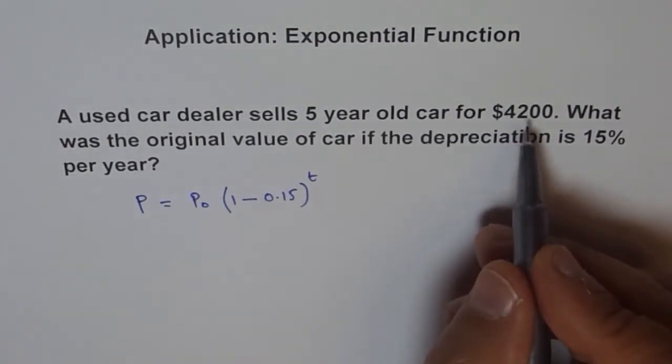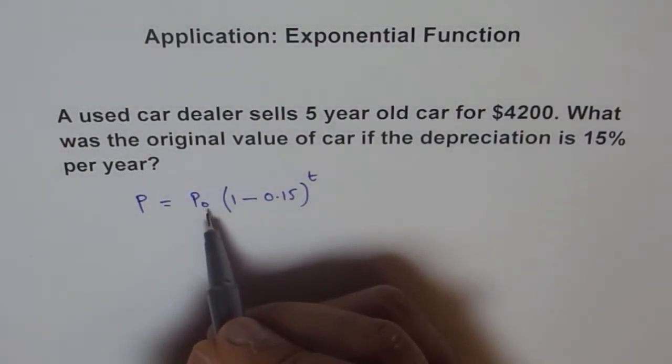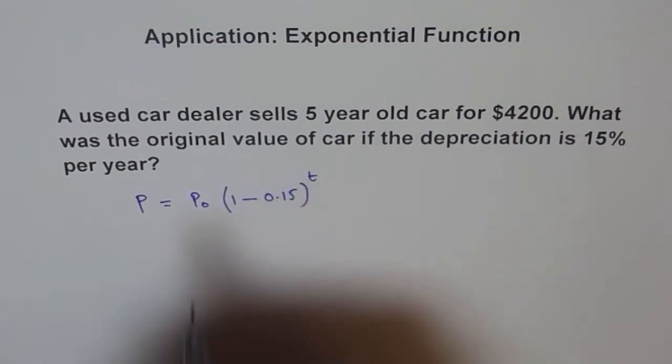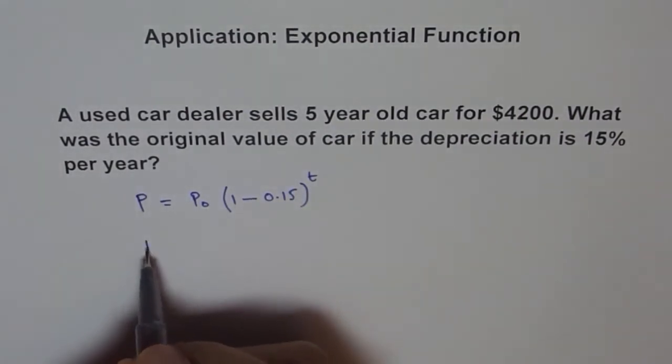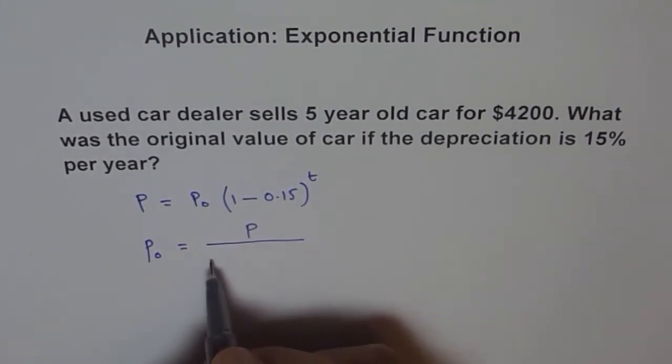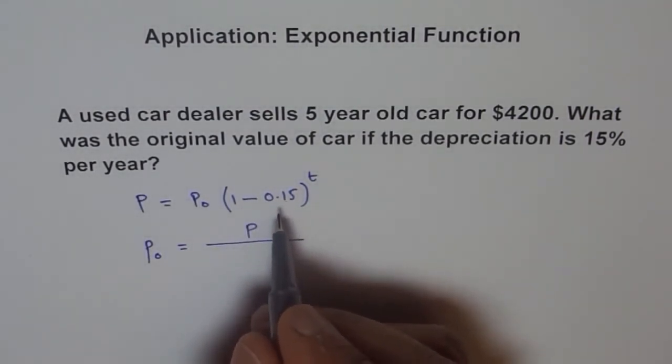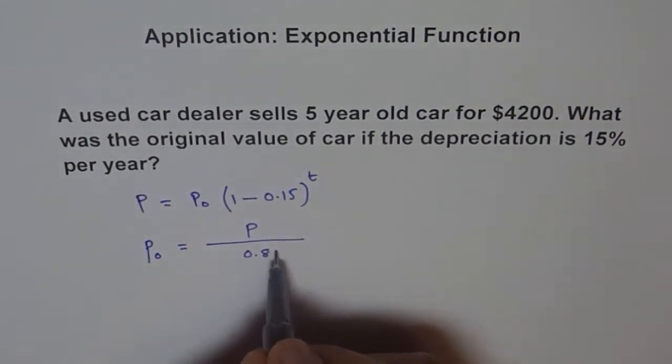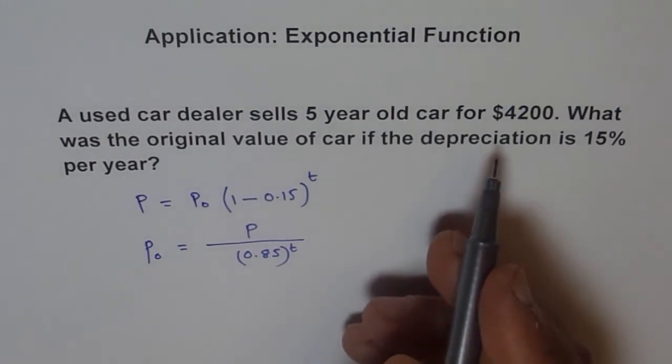So P is given to us and we need to find P₀, the initial amount. We have P₀ = P / (0.85)^t, and t is 5.